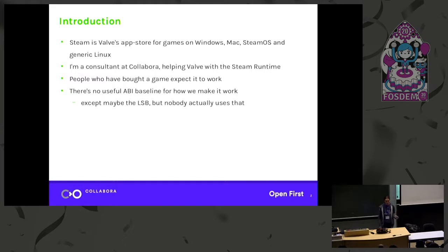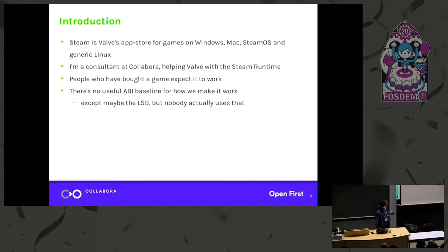The problem is, if you buy a game, quite reasonably, you want to play it and you want it to work on your computer. But Linux distributions are all different. Does it use libjpeg 6 or libjpeg 9? Does it use libssl 1.0 or 1.1 or something from the distant past? You can't really know what you're targeting. The LSB exists, but it's got like three libraries in it and no operating systems actually use it anyway, so it's not a great baseline.